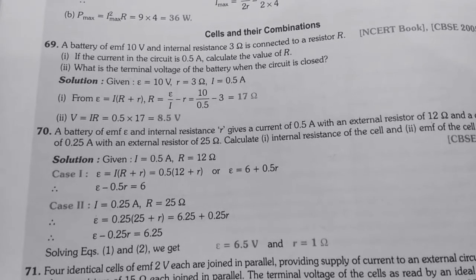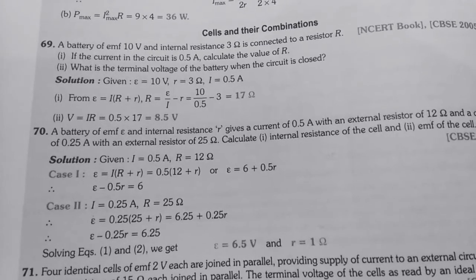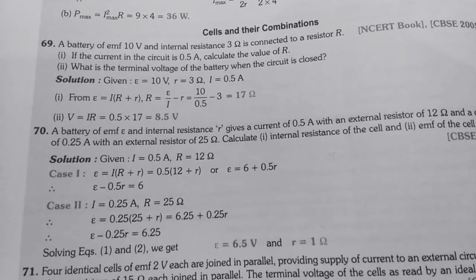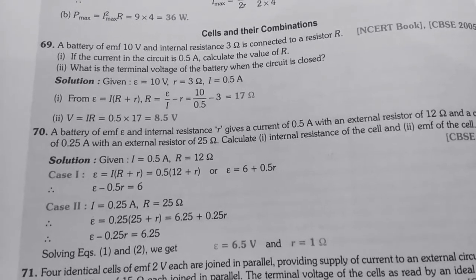So what values are given? Let's see first. The EMF is given 10V, internal resistance is given 3 ohm and current is given 0.5A.